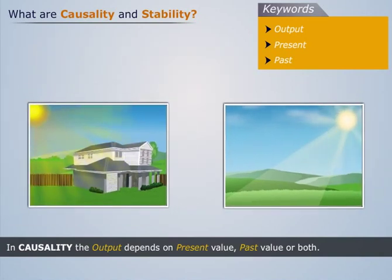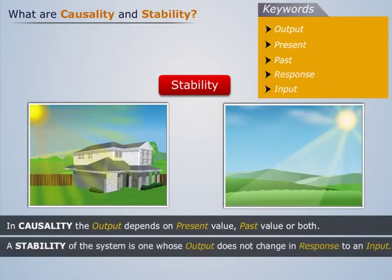The same thing happens in case of stable systems. Thus we can say that the stability of the system is one whose output does not change in response to an input.